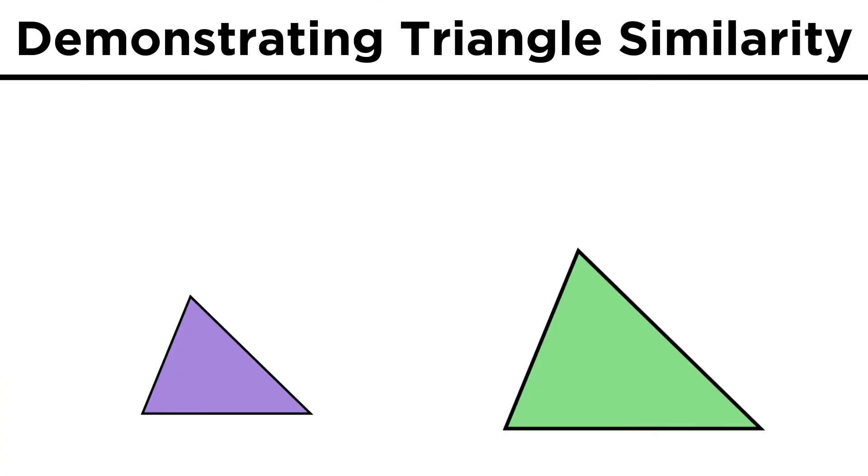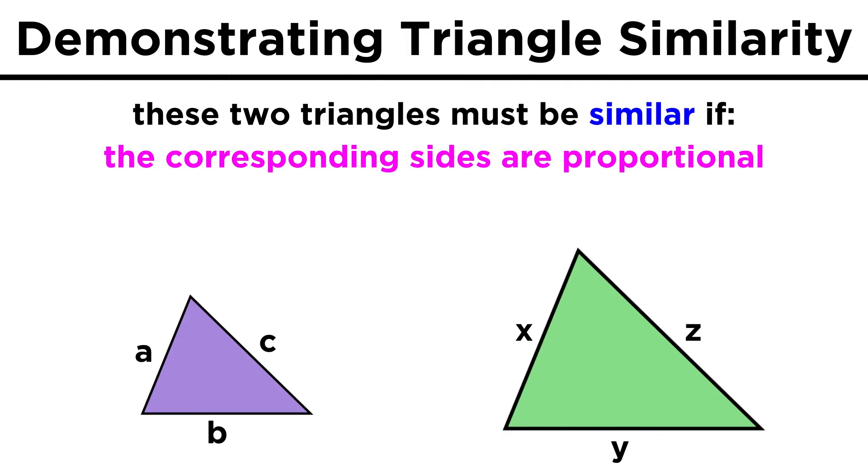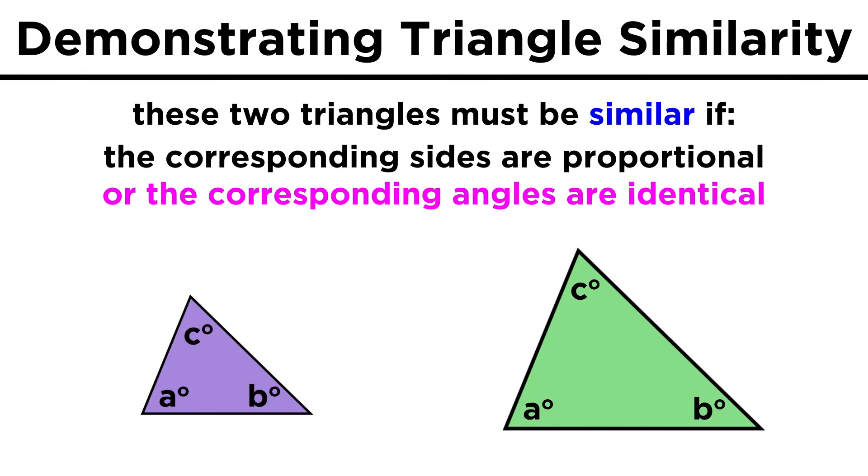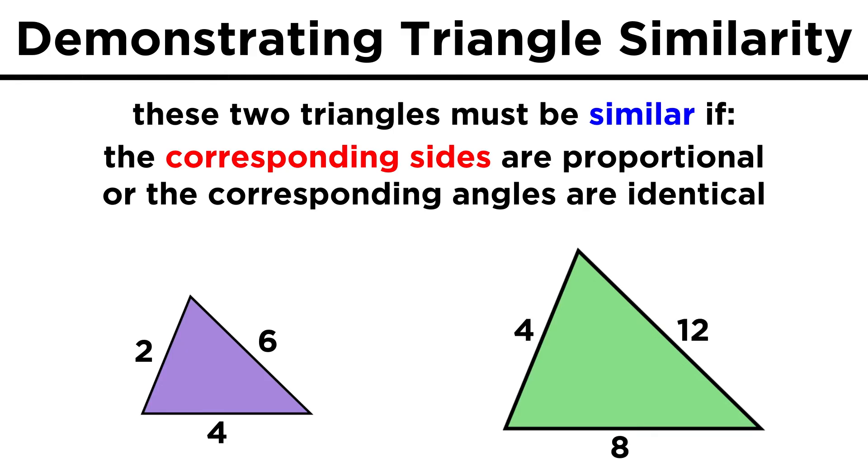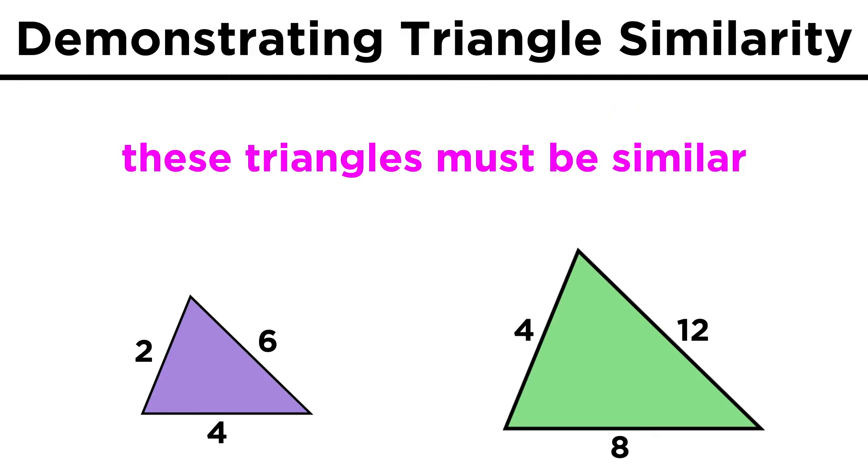When trying to demonstrate similarity, we have to look at the corresponding sides and angles. Here are two triangles that look like they might be similar. We can prove they are similar if the corresponding sides have lengths that are proportional, or if the corresponding angles are identical. This means that if this triangle has sides equal to two, four, and six, while this one has sides equal to four, eight, and twelve, the two triangles must be similar.